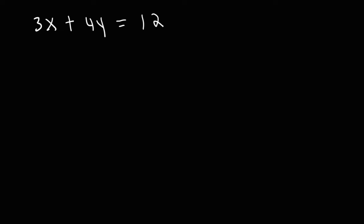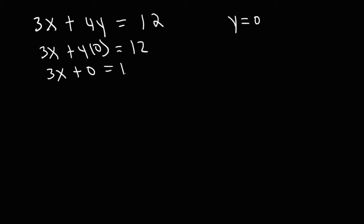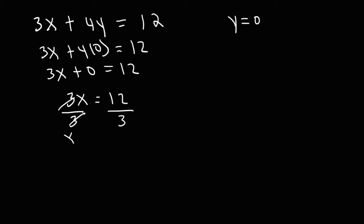Let's start with the x-intercept. To find the x-intercept you need to replace y with 0. So this is going to be 3x plus 4 times 0, which equals 12. 4 times 0 is 0, and 3x plus 0 is just 3x. Now you need to calculate the value of x, so divide both sides by 3.